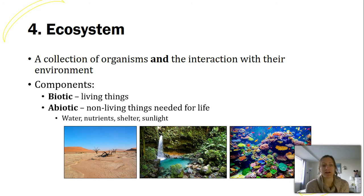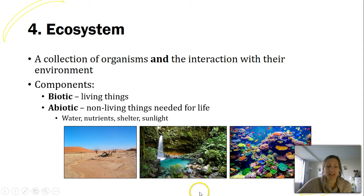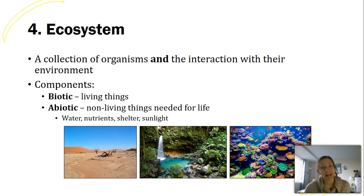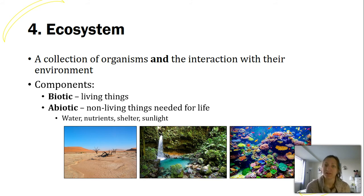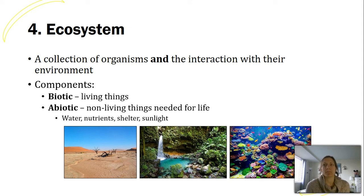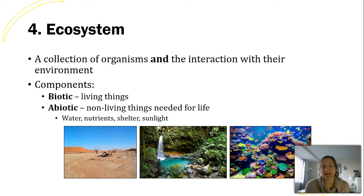Other examples of abiotic factors include nutrients in the soil, shelter for animals, sunlight, and temperature. Temperature is non-living but still affects which organisms live in an area. Scientists studying at the ecosystem level look at things like migration patterns stimulated by sunlight or temperature, or nutrient cycling in a rainforest. In this unit, we'll briefly touch on ecosystems but really focus on populations and communities.